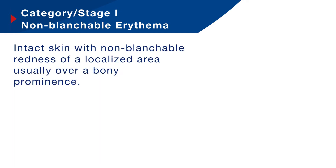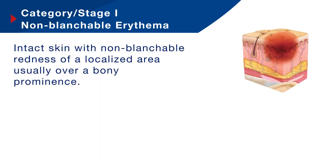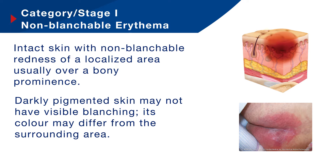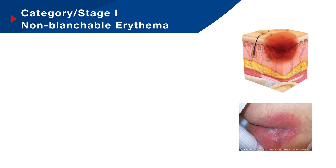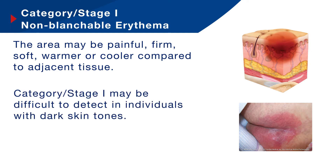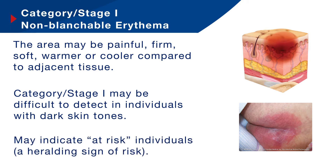So firstly, category or stage one pressure ulcer — this is non-blanchable erythema. This is intact skin with non-blanchable redness of a localised area, usually over a bony prominence. Darkly pigmented skin may not have visible blanching and its colour may differ from the surrounding area. The area may be painful, firm, soft, warmer or cooler as compared to adjacent tissue. Category one pressure ulcers may be difficult to detect in individuals with dark skin tones, and I will go on to talk about identifying pressure damage in people with dark skin tones later in the video. Category one pressure ulcers may indicate at-risk individuals — a heralding sign of risk.